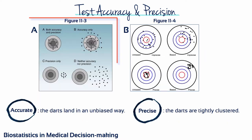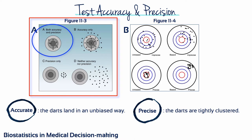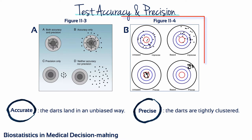The dart throw can be both accurate and precise, as in example A; accurate only, as in B; precise only, as in C; or neither accurate nor precise, as in D. Accuracy is shown by darts hitting the board with unbiased placement to one location — the test measured what you wanted it to measure. Precision is shown by the darts being tightly clustered — the test measured the same thing repeatedly, so it was reliable. When there is bias, the errors are not random; they are biased towards a particular part of the board.